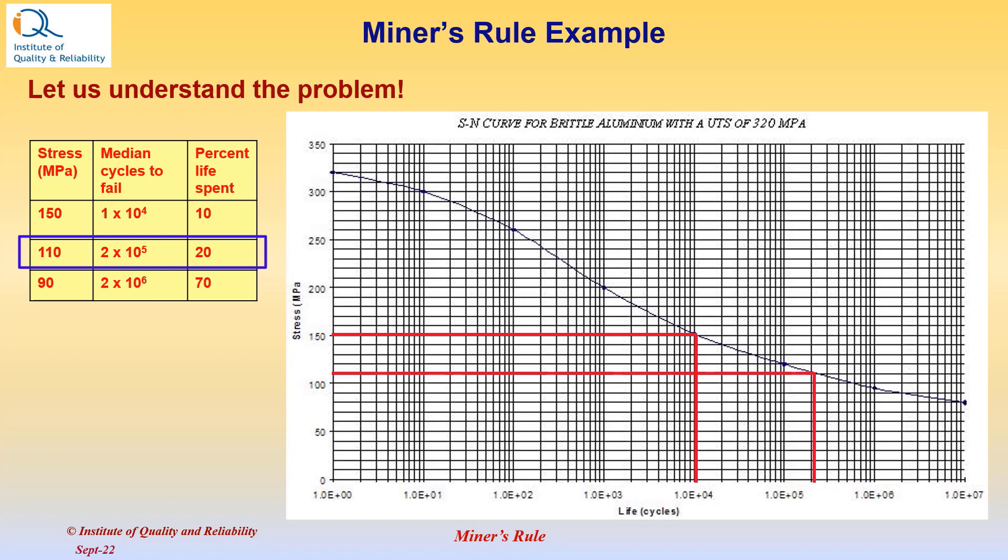For the second stress level 110, we can see that the median life is 2×10^5. And at 90, it is approximately 2×10^6.